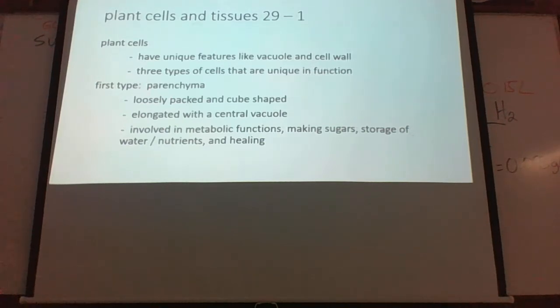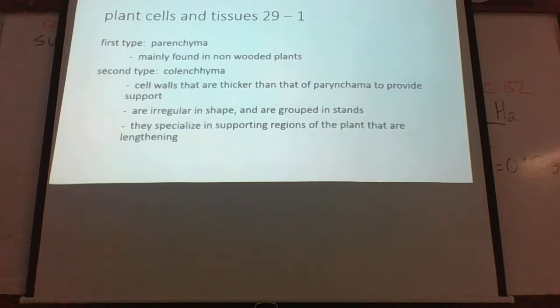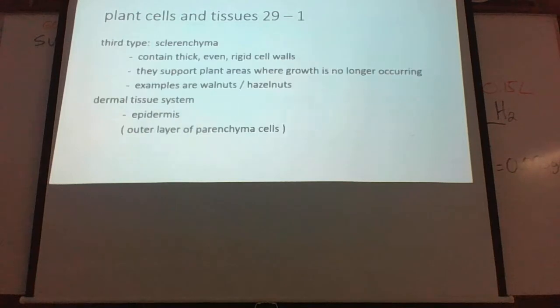The second type is called colenchyma. Here in the stems of plants, because that is where these plants elongate. When we talk about plants, you have stems, leaves, and roots, and the colenchyma would be found in the stems.